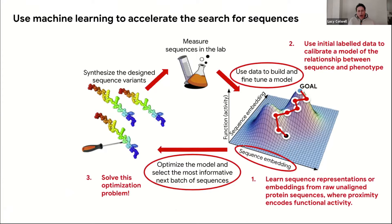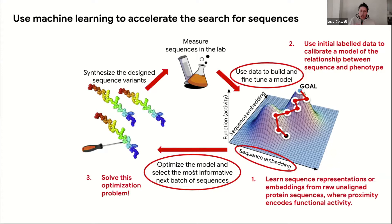There are three key areas I'll talk about. One is learning sequence representations or embeddings — we've been learning them from raw unaligned sequences, and you can also learn from aligned sequences. The point is to learn a representation or space where proximity tells us about functional activity. Then we need to use some initial labeled data to build and calibrate a model of the relationship between sequence and whatever phenotype we're interested in. Finally, we need to solve the optimization problem: finding good, diverse sequences, which involves thinking carefully about how not to just focus on a single peak.